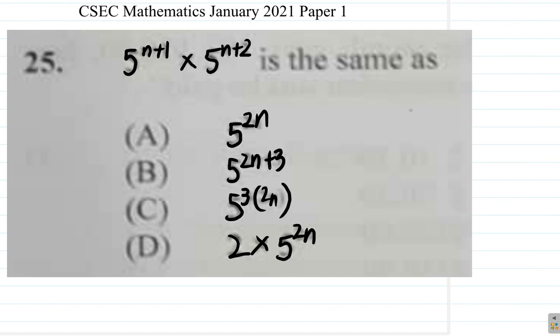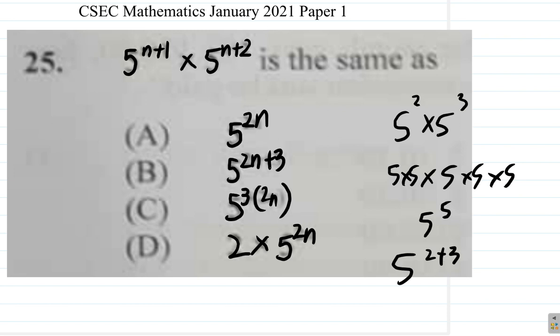Remember here, if you have 5 raised to the 2 multiplied by 5 to the 3, is the same as 5 by 5 to the 3 is the same as 5 by 5 by 5. And when you put them all together, you have 1, 2, 3, 4, 5 of them. It is 5 to the 5. So, you can call this 5 to the 2 plus 3, which is 5 to the power of 5.